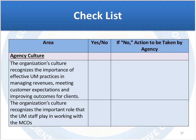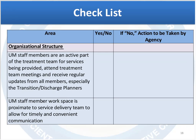The first category is agency culture. It's important to have the culture of your agency recognize how effective utilization management practice can support effective revenue streams, the ability to meet customer expectations, and ultimately improving outcomes for the client. This involves reframing that function and getting individuals in the agency prepared as you move forward with this initiative.